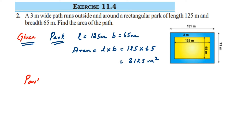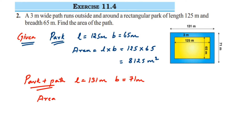Now we're going to do the same for the park including the path. In that case, the length is equal to 131 meter and breadth is equal to 71 meter. The area of the park plus path together is equal to length into breadth, so 131 multiplied by 71 equals 9301 meter square.